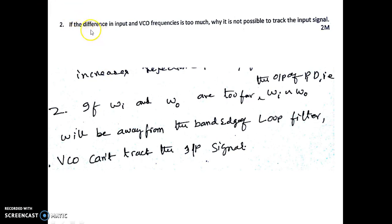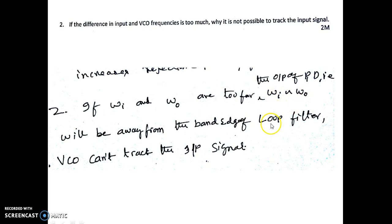Next question: if the difference between the input and VCO frequency is too large, why is it not possible to track the input signal? If omega_i (input angular frequency) and omega_0 (VCO frequency) are too far apart, the difference (omega_i - omega_0) will be outside the band edge of the loop filter and will not produce an output voltage. The VCO can only track the input when the frequency difference falls within the loop filter band edge.